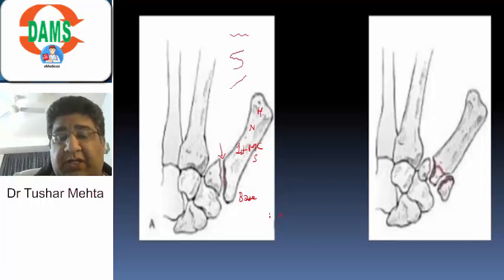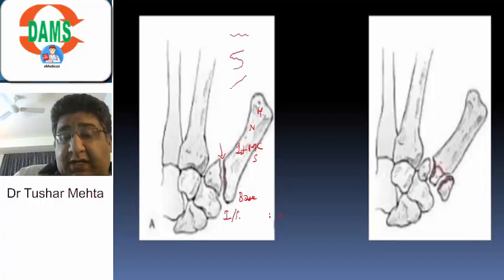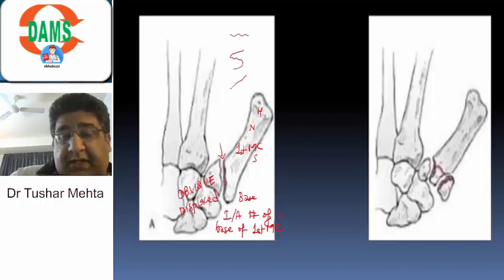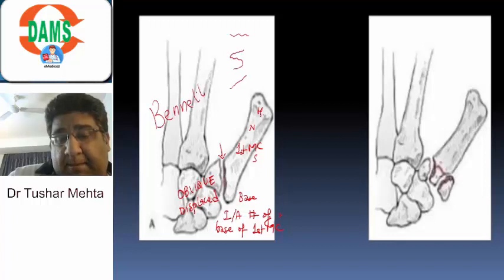So, to conclude, we are dealing with an intra-articular fracture of the base of the first metacarpal which is oblique and displaced, and this is what is called as Bennett's fracture.